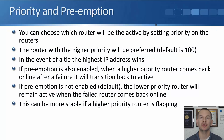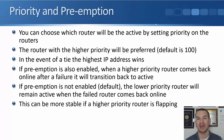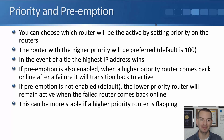In this lecture you'll learn some HSRP advanced topics including priority and preemption and a way that we can get load balancing with HSRP. You can choose which router will be the active by setting priority on the routers when you do the configuration. The router with the higher priority will be preferred; if you don't set a priority it will default to 100. In the event of a tie the highest IP address wins. If preemption is also enabled, when a higher priority router comes back online after a failure it will transition back to active.